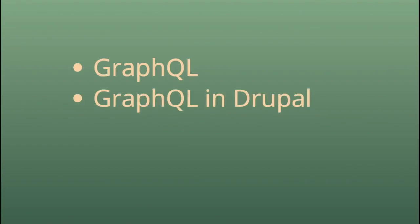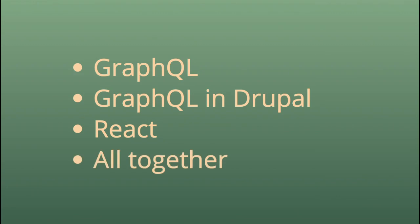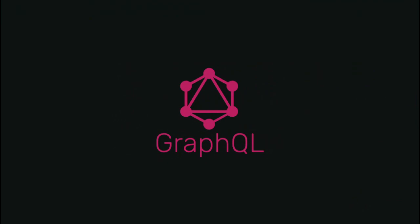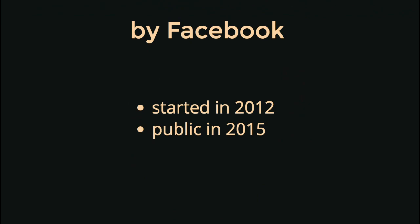The presentation is going to be about GraphQL: what is it, GraphQL in Drupal, then we'll talk about React as a frontend, and then we want to see it all working together. So let's first go into GraphQL. What is GraphQL? GraphQL has been introduced by Facebook, and they are actually using it in all their mobile apps — running with GraphQL since 2012. They publicly published the schema, the idea, and the specification behind it in 2015. Since then, it has been very widely used by a lot of different people.